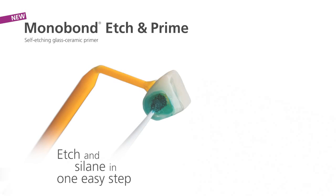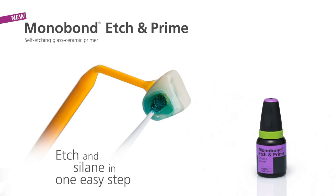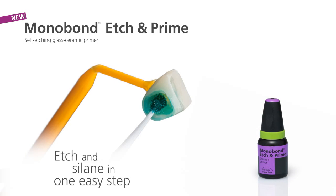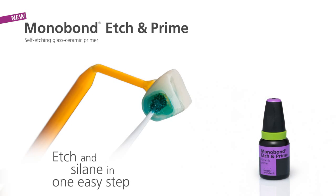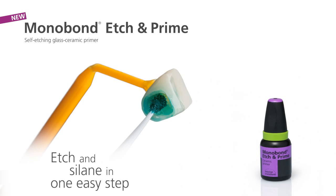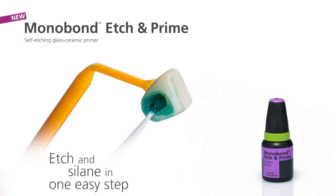Monobond Etch & Prime, the first single component ceramic primer in the world for the etching and silanating of glass ceramic surfaces in one working step. Find out now how this innovation works.